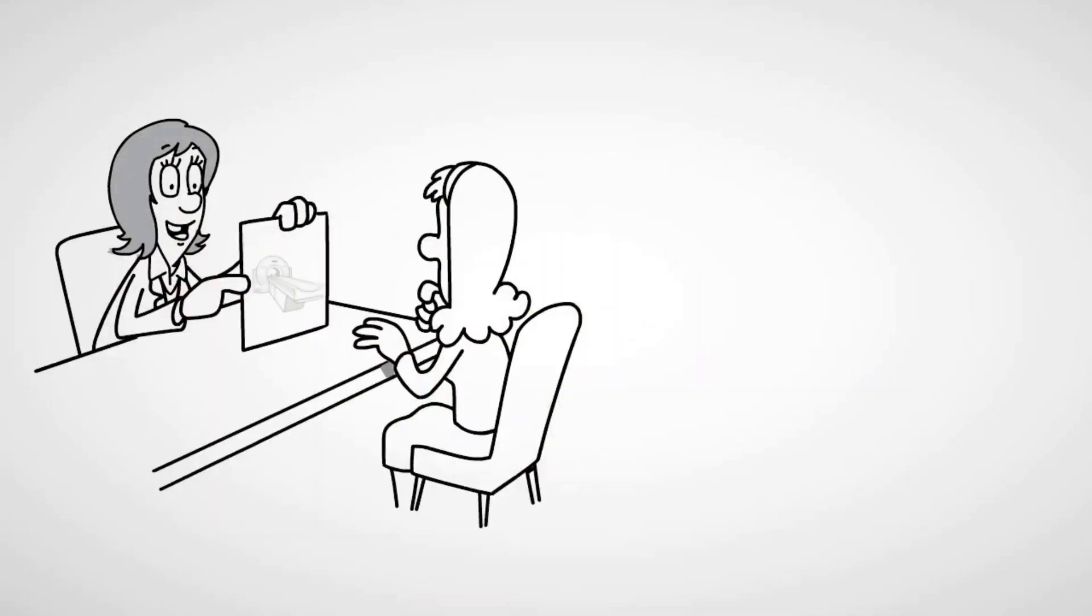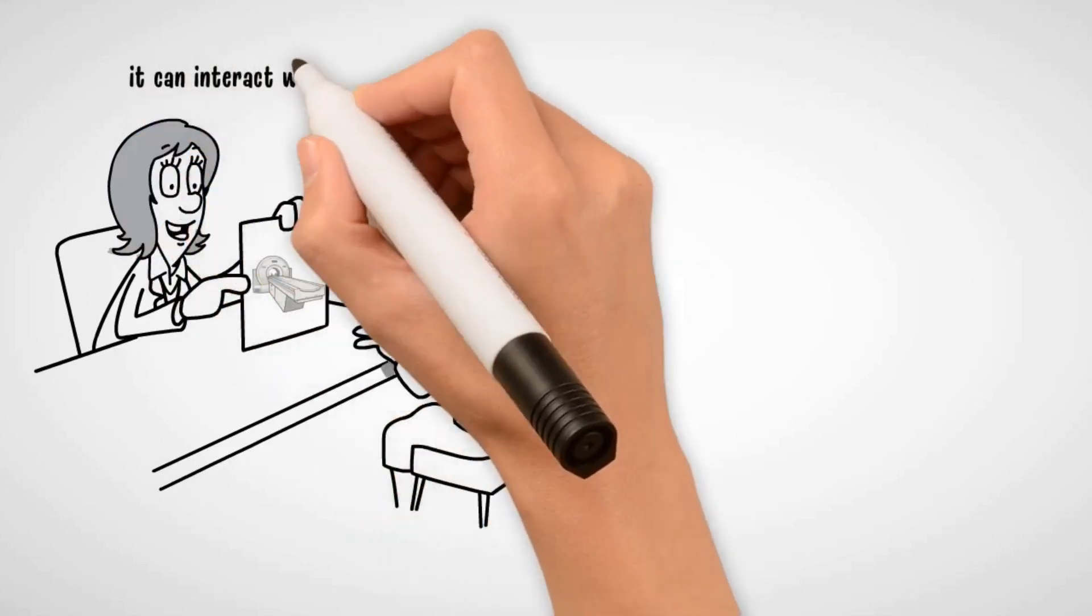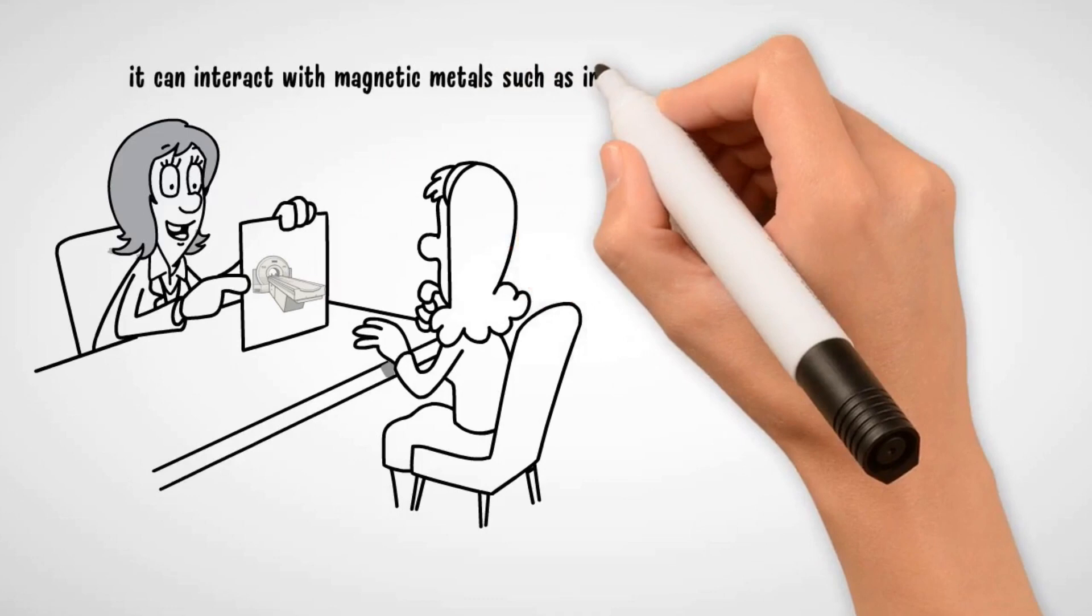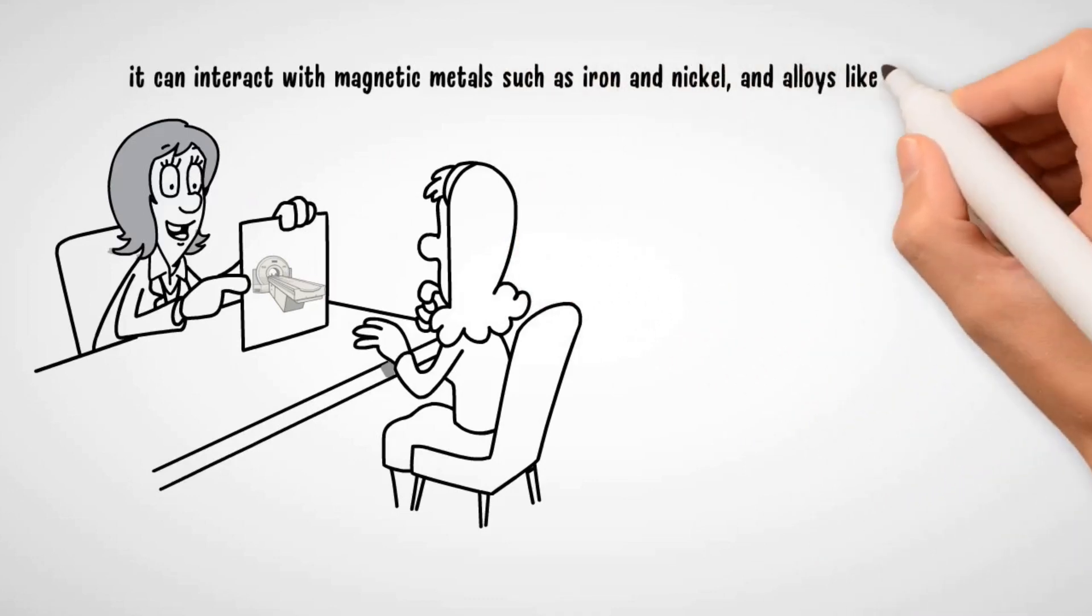to see inside your body. It has revolutionized how we practice medicine. Because MRI uses such a powerful magnet, it can interact with magnetic metals such as iron and nickel, and alloys like stainless steel. This means that the material